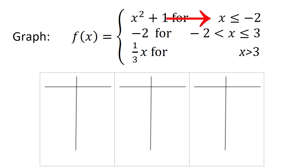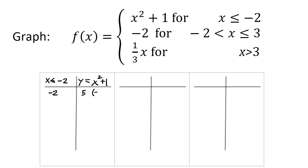I've got to look at x is less than or equal to negative 2 first. f of x equals y, so y, for every x that's less than or equal to negative 2, y is going to equal x squared plus 1. And I know that's going to look like a parabola. I'm going to have to look at the endpoint. So when x equals negative 2, y equals negative 2 squared, so that's 4, plus 1, that's 5. So I've found the point negative 2, 5.